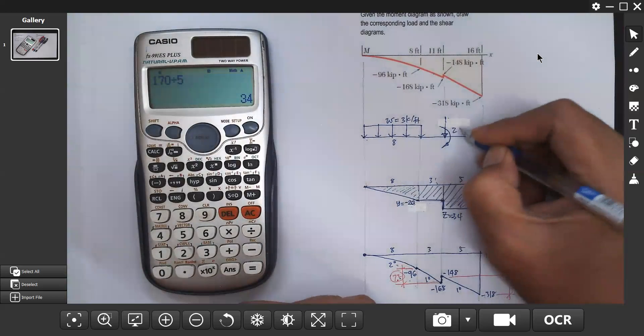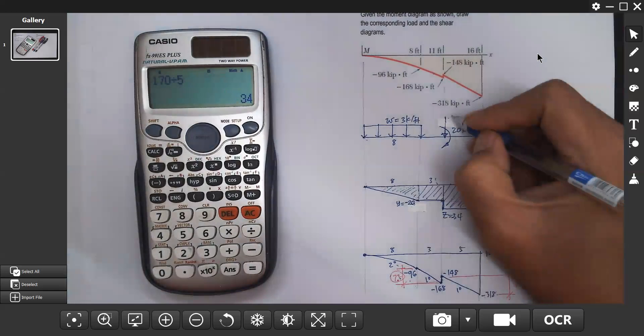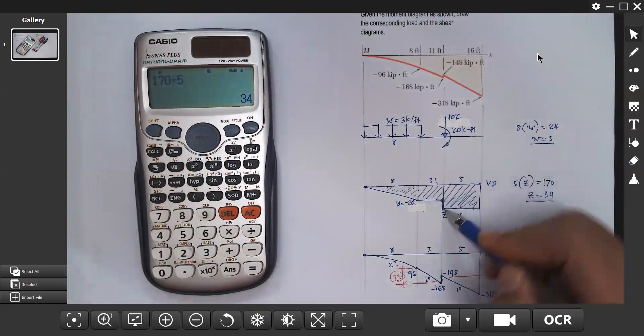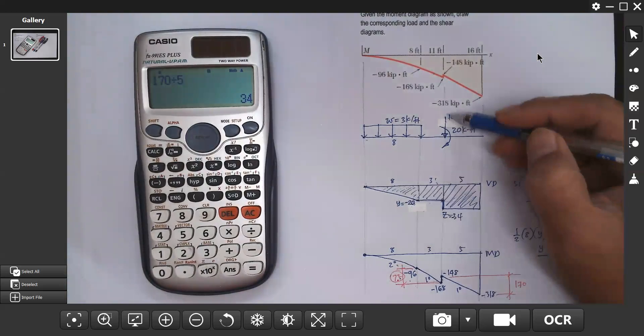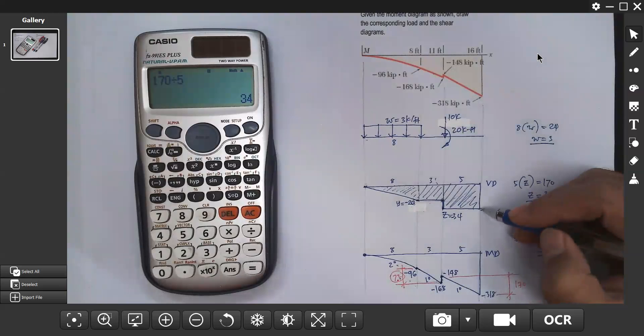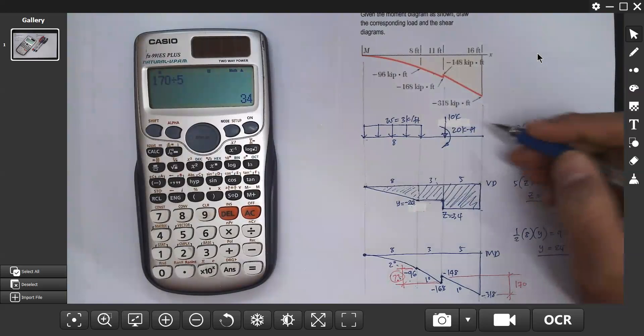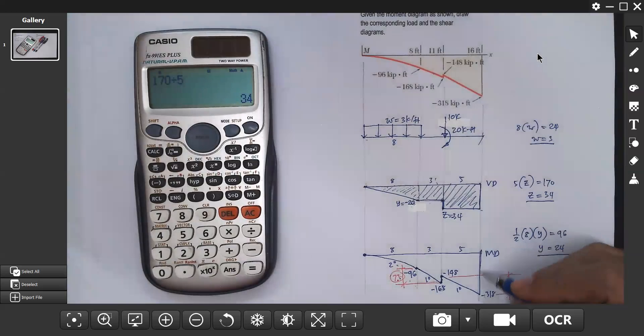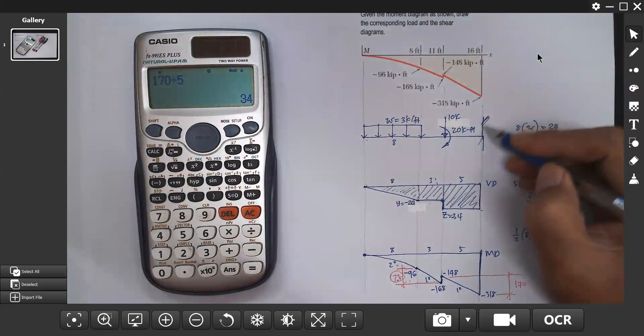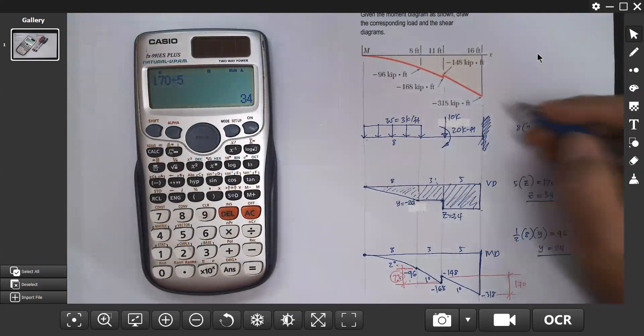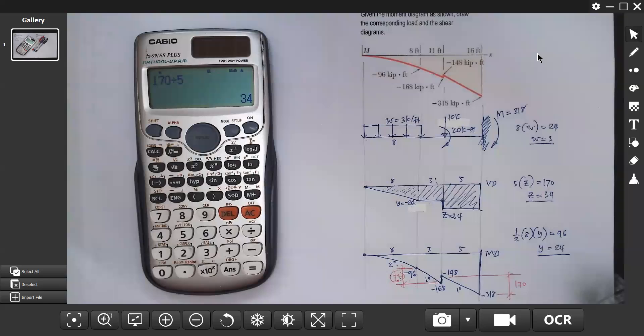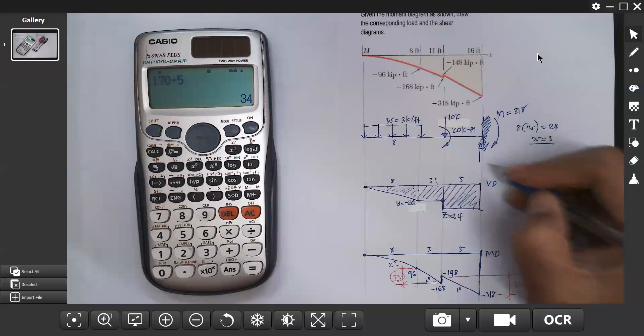We have a moment of 20 kip-feet and a concentrated load of 10 kips. From negative 24 it dropped to negative 34, so there's a concentrated downward load of 10 kips. From this point to this point, horizontal means no load, and then there's an upward reaction. This is a fixed support because there's a negative moment of 318 and a reaction of 34.